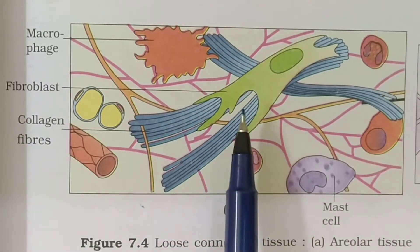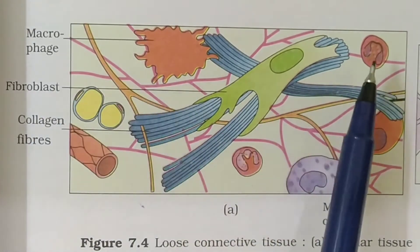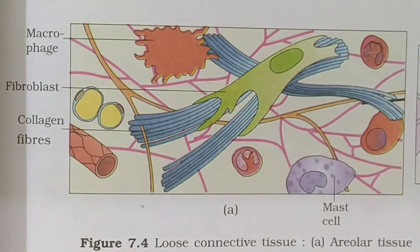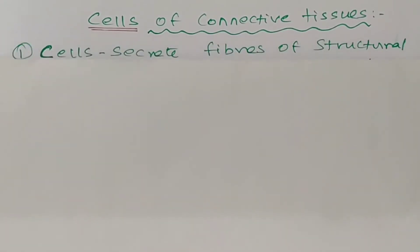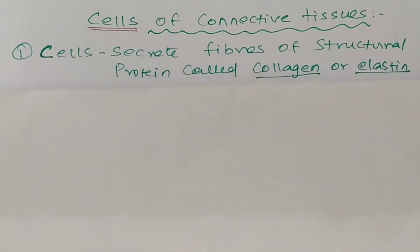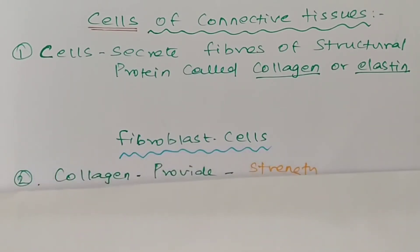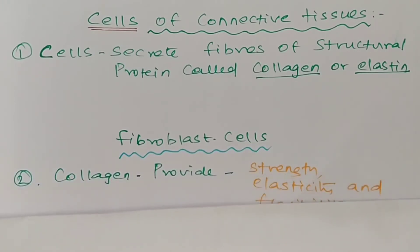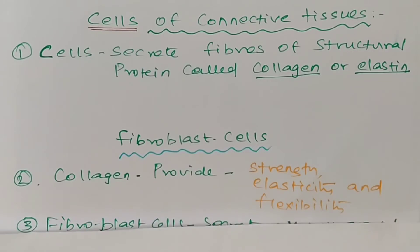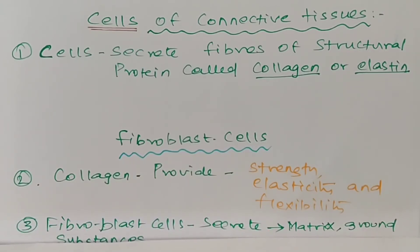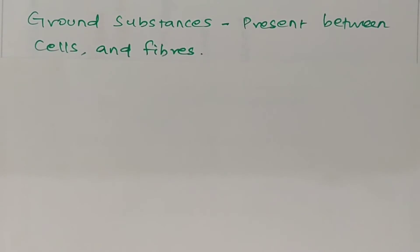This is a loose connective tissue. In addition to fibroblast cells, it has some other cells also: macrophage cells, blood cells, and mast cells. The fibroblast cells secrete the fibrous structural protein — collagen or elastic fibers — which provide strength, elasticity, and flexibility to the connective tissues. The fibroblast cell also secretes a ground substance or matrix, which is present between the cells and fibers.